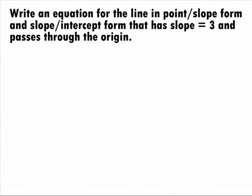In this example, we want to write an equation for the line in point-slope form and slope-intercept form that has a slope of 3 and passes through the origin.